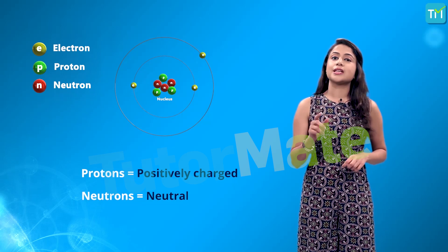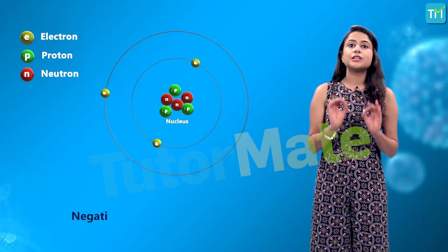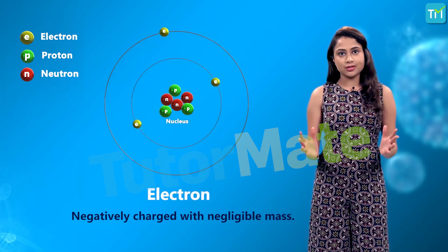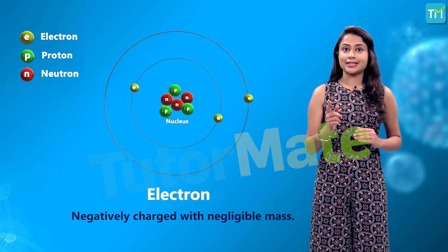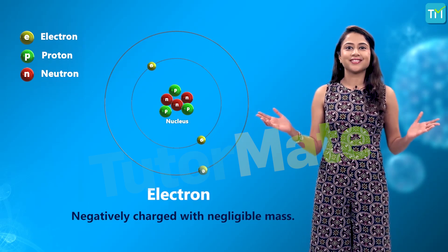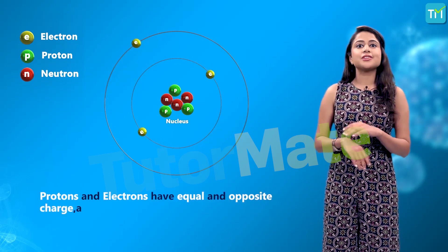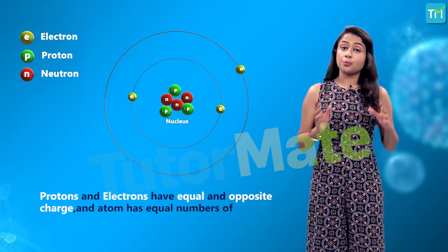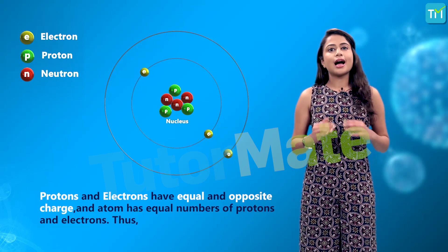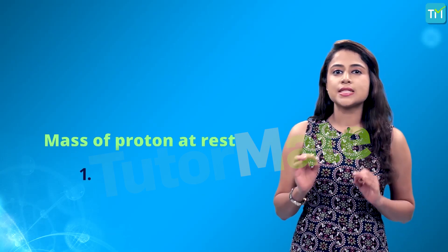Protons are positively charged and neutrons are neutral and have no charge, so the nucleus of an atom is positively charged because it has positively charged protons. Now, moving to the extra-nuclear part of an atom: this part is made up of negatively charged particles called electrons. These electrons revolve around the nucleus like the planets revolve around the Sun. Protons and electrons have equal and opposite charges, and normally an atom has an equal number of both protons and electrons, so atoms are usually neutral.